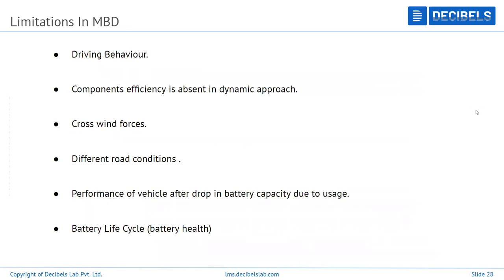One limitation is that it's difficult to predict driving behavior — my driving behavior differs from that of a 60-year-old person, and there are many different driving styles. Component efficiency in a dynamic approach is also absent — in MBD you provide a static efficiency value, for example 0.65 for motor controller efficiency. This same number is applied across the complete drive cycle, which doesn't reflect reality. In reality, efficiency changes with speed and operating conditions.